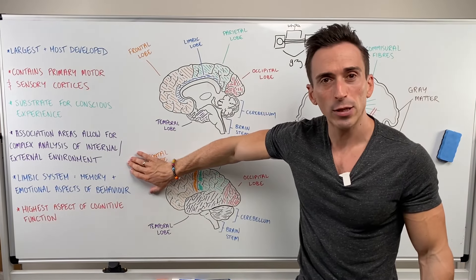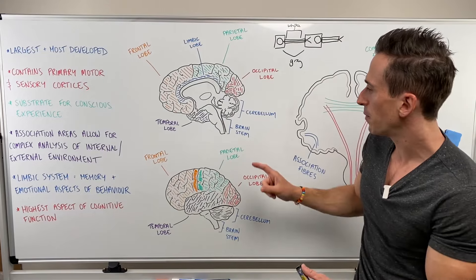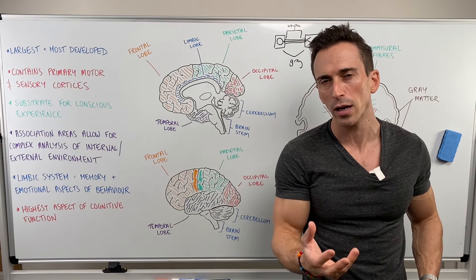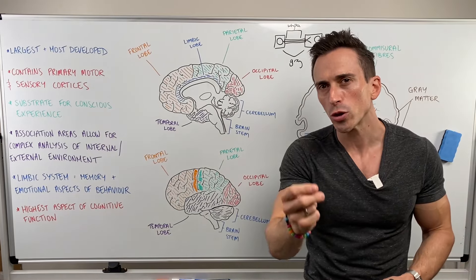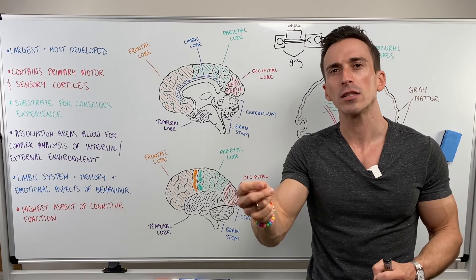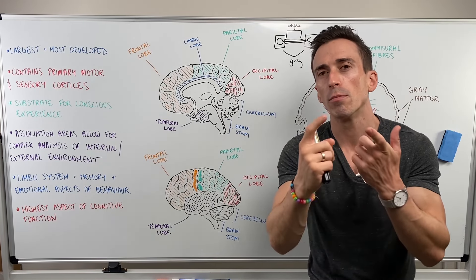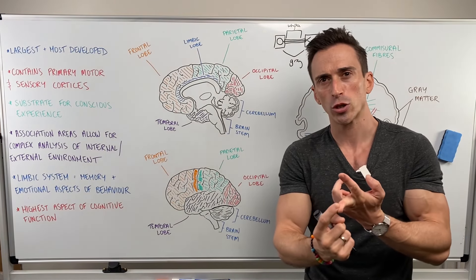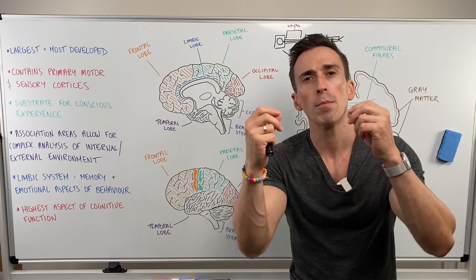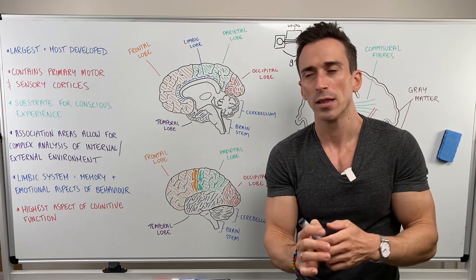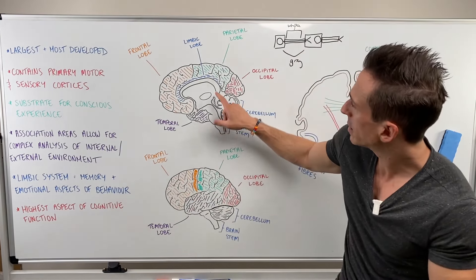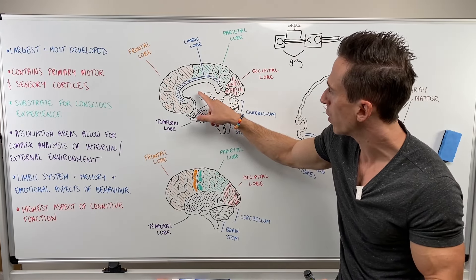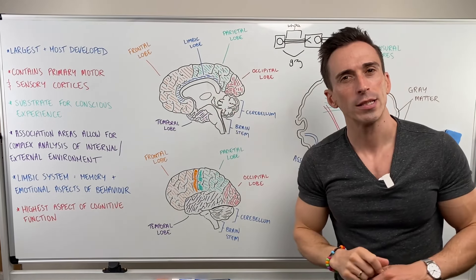The cerebral hemispheres also contain the limbic system. The limbic system is important for memory and emotional aspects of behavior — think of the emotional aspects of relationships, reproduction, and fight or flight. This is the limbic system. You can see part of the limbic lobe here, but there are deeper limbic structures as well, right near the thalamus.